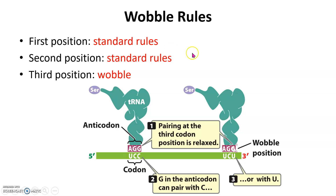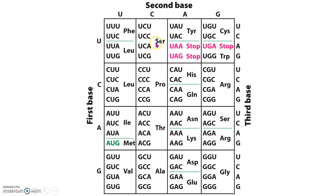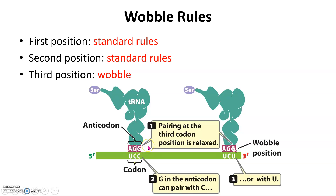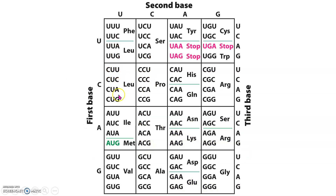Back to the wobble rule. The tRNA's job is to find the codon that's complementary to it, but it's relaxed in the third position, meaning it doesn't have to follow the standard base-pairing rules. This allows it to violate those rules at the third position. Looking at our genetic code, the third position is where we see variability — synonymous codons are identical in the first two positions, and the third one changes.